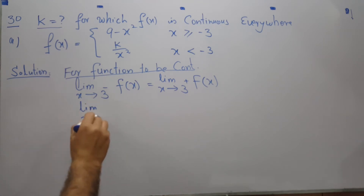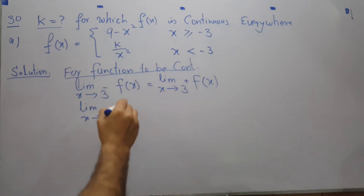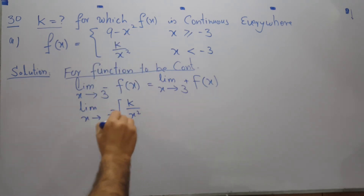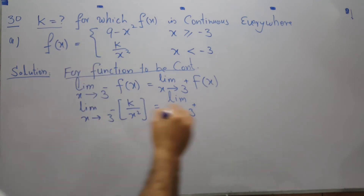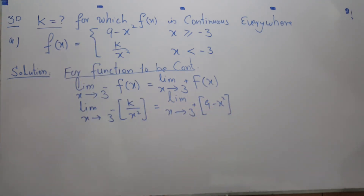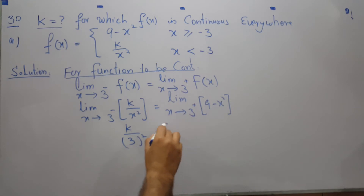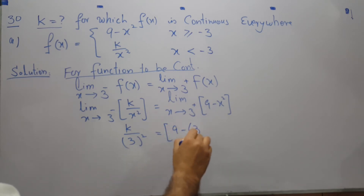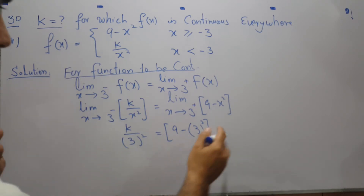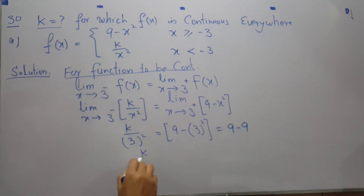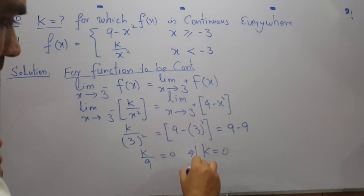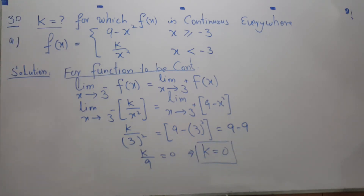The limit as x approaches minus 3 from the negative side uses k over x squared, and the limit from the positive side uses 9 minus x squared. Applying the limit gives k over 3 squared on one side and 9 minus 3 squared on the other. That's k over 9 equals 9 minus 9, which is 0, so k equals 0. When k equals 0, the function is continuous everywhere.